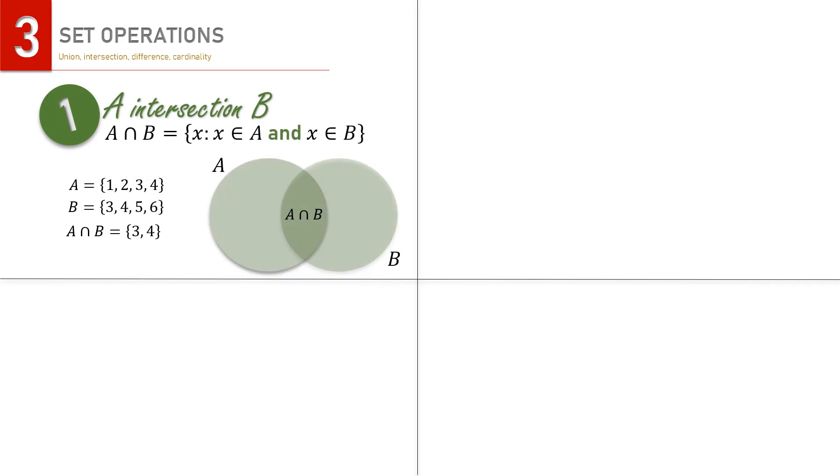So we already know one of the set operations, the intersection, and there are 3 more. I rewrite it here, the intersection. The resulting set consists of the elements that belong to both A and B. Look, the keyword here is AND.